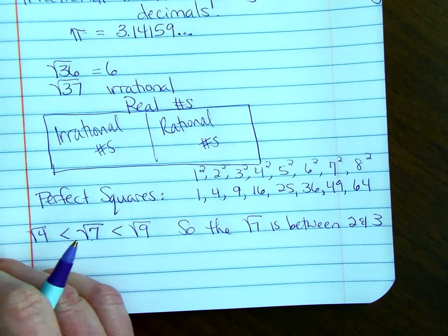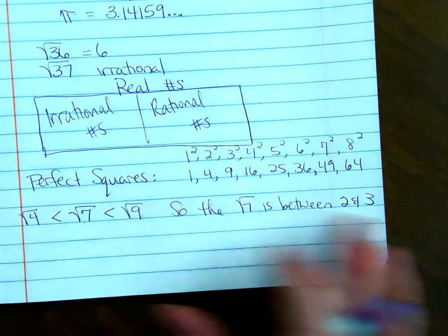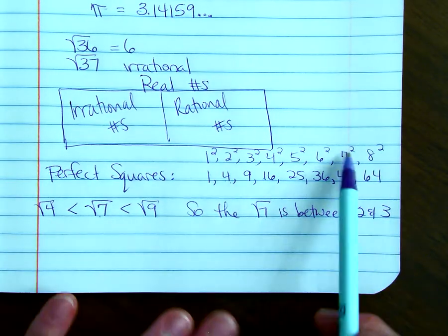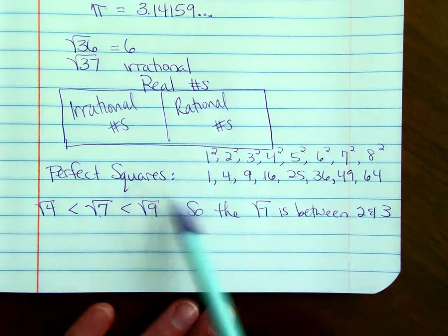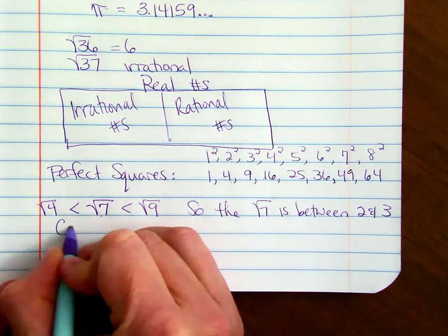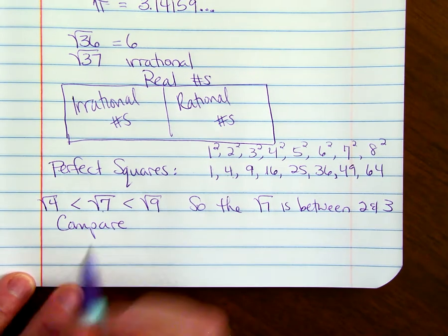So, when you're asked what is the square root of some number, what two consecutive numbers is it between? If you look at this list, it really helps you to see where it would fall. Compare.